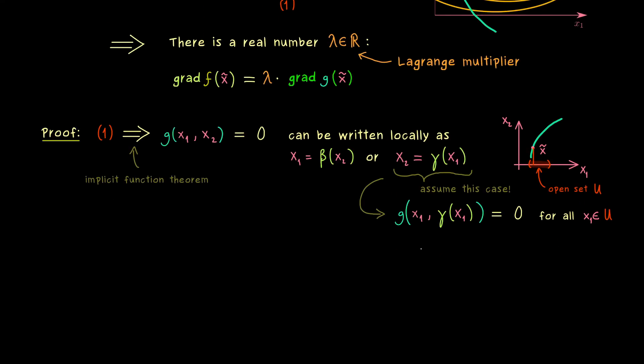And moreover the implicit function theorem also tells us that γ is a C¹ function as well. Hence it's allowed to differentiate both sides of the equation here. Indeed we have a function of one variable x₁ here. So we can calculate the derivative with respect to x₁. Hence on the right hand side we still have 0. But on the left hand side we can use the chain rule.